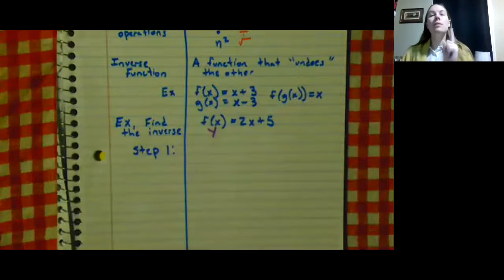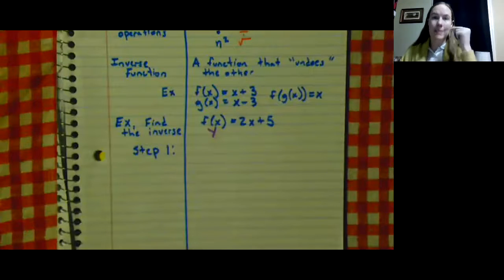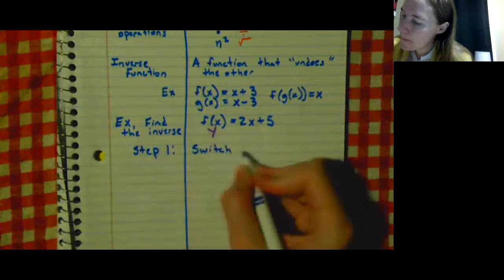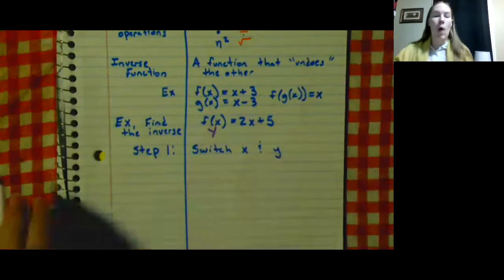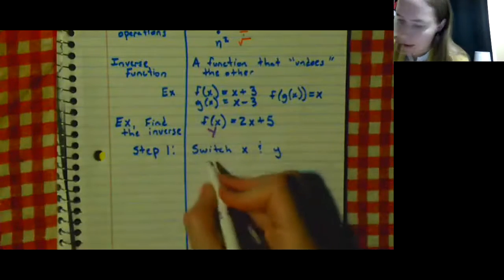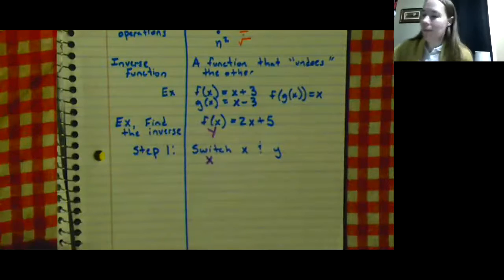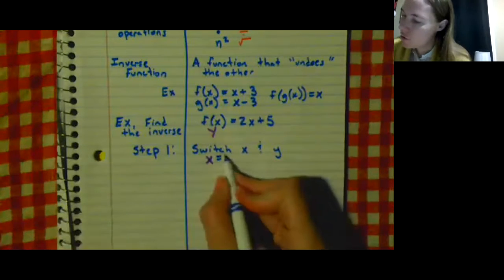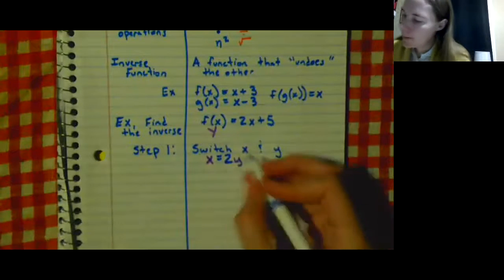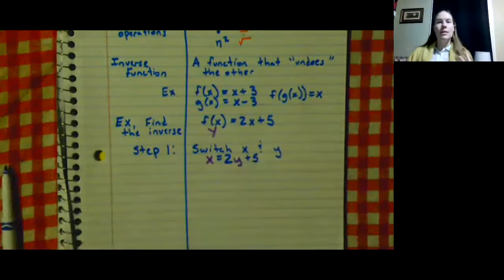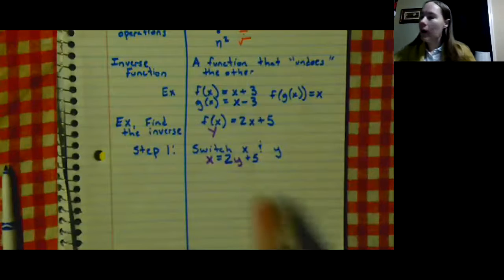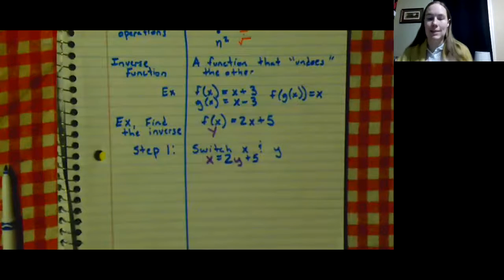So the first step, the weird step that is the most important step, is you want to switch x and y. So what I mean by that is where my y is, I'm going to now have x, so I'm going to have x = 2... where my x is, I'm now going to have my y, plus 5. And the reason we do this is because the inverse will give us the opposite. So by switching our x and y, we're going to be able to find the equation that undoes the other.